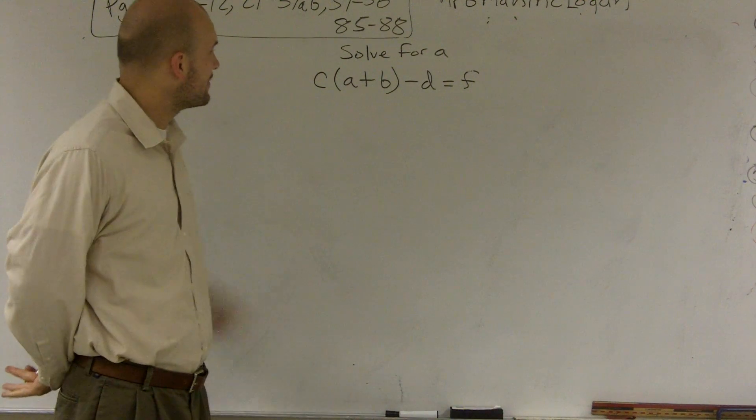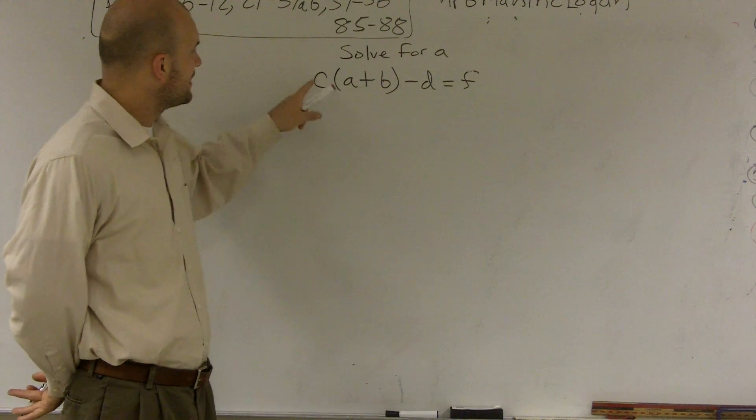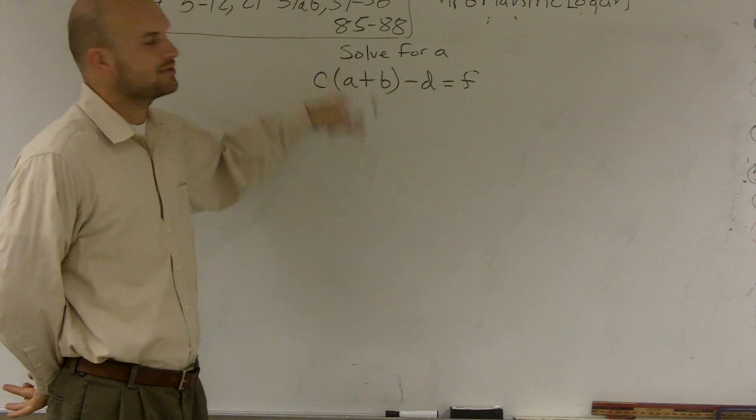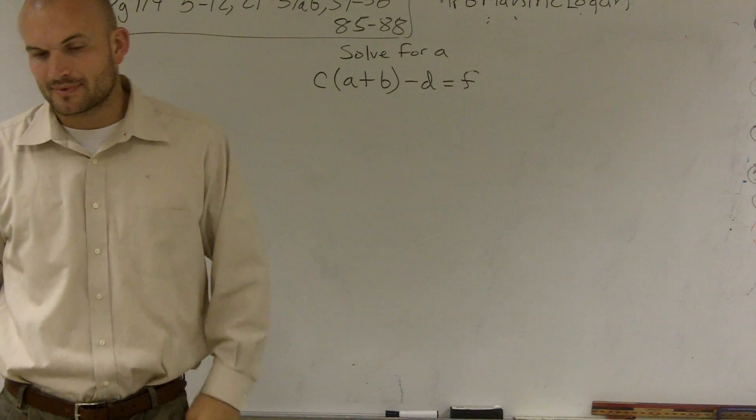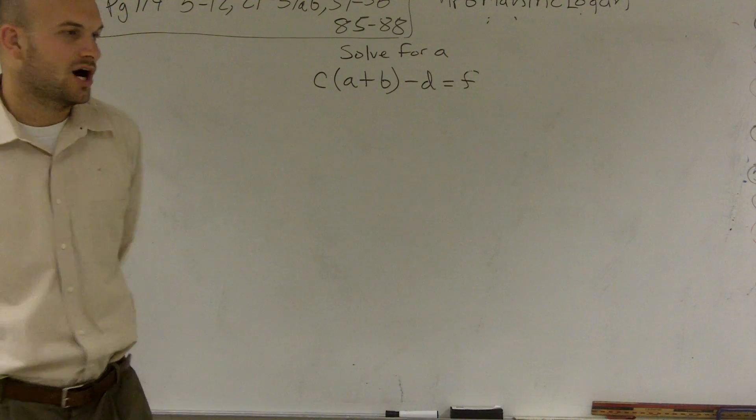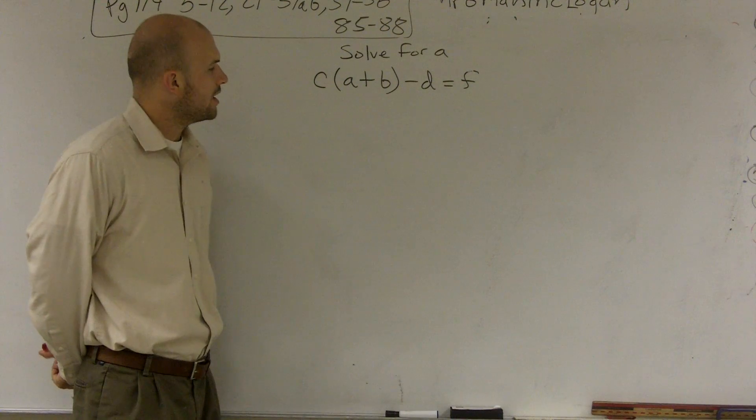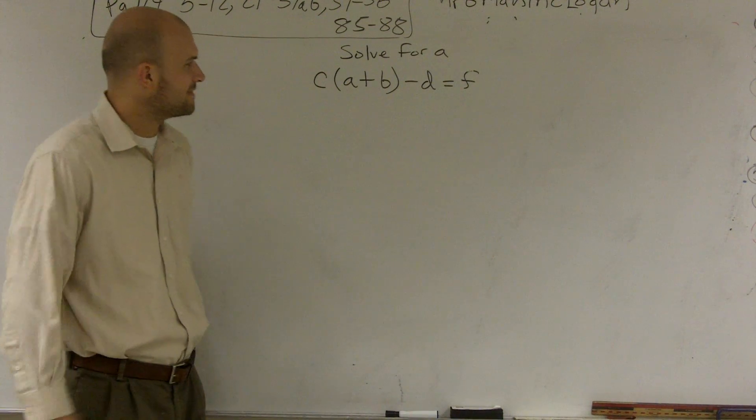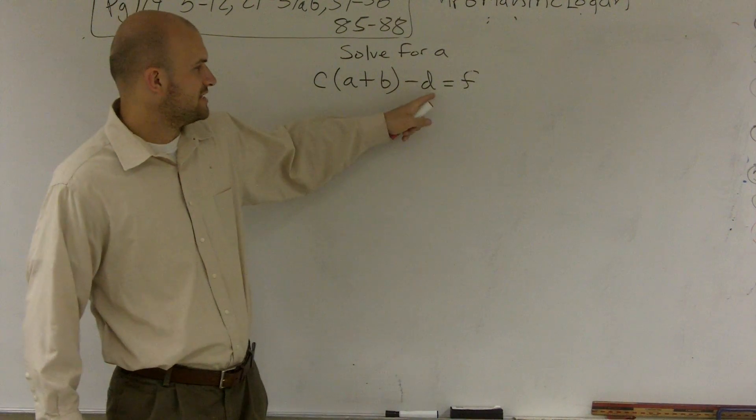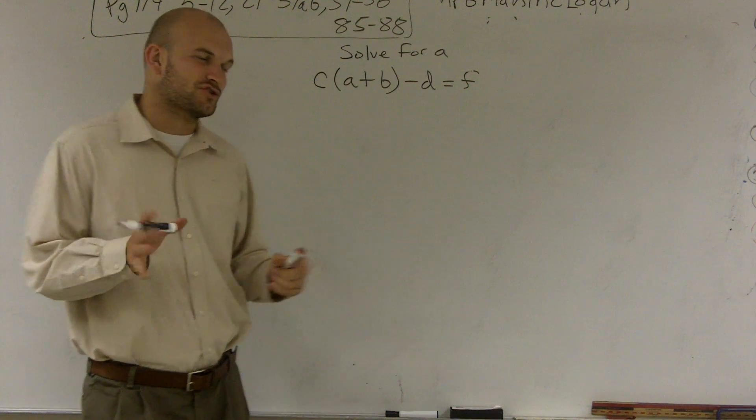There's a lot of things happening to the A right now. I have it being added by B, and also it's being multiplied by C. To undo all this stuff, there's a couple ways you could do it. You could undo the multiplication by C, but then you'd have to divide D by C and F by C, and it might get a little tricky.